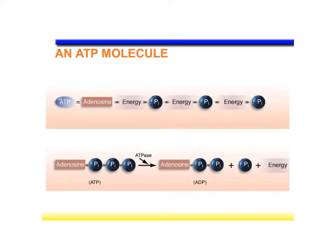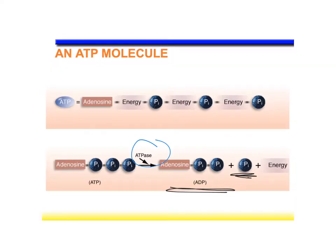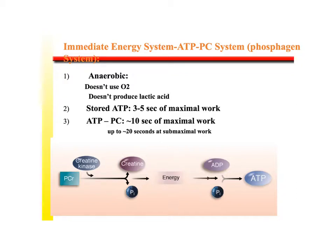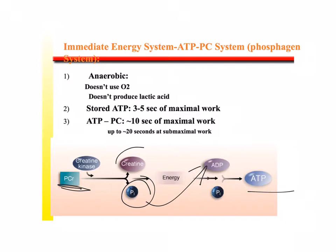The ATPase enzyme cleaves phosphate bonds: an adenosine molecule with three phosphate molecules attached is ATP, and once we cleave off that bond we synthesize an ADP molecule and an inorganic phosphate molecule. The phosphagen system involves taking a phosphate molecule from phosphocreatine and placing it on an ADP molecule, producing ATP and creatine as a byproduct.